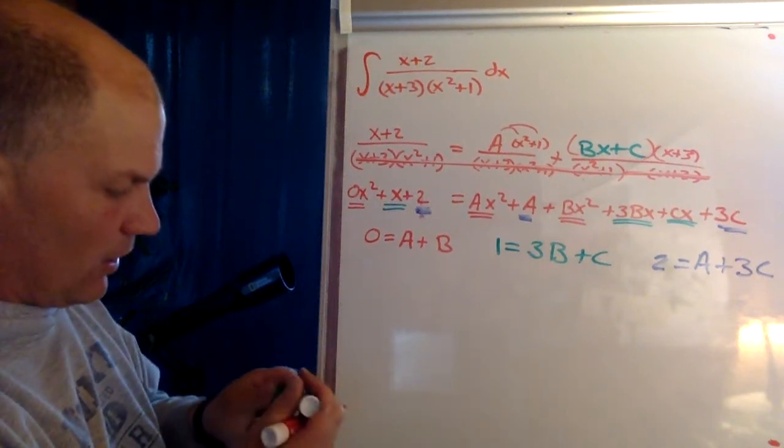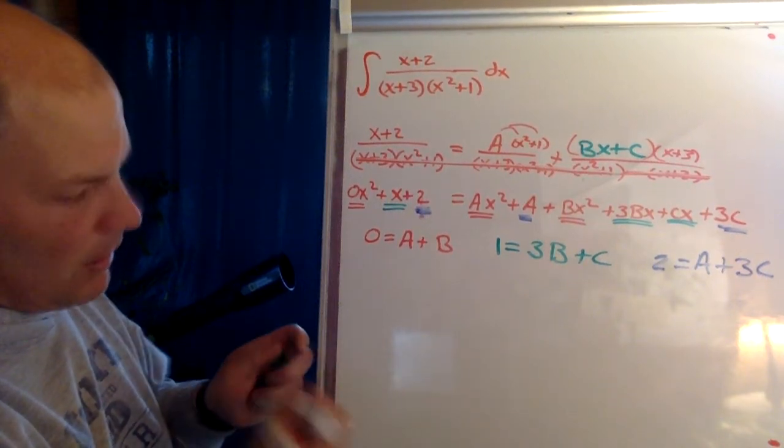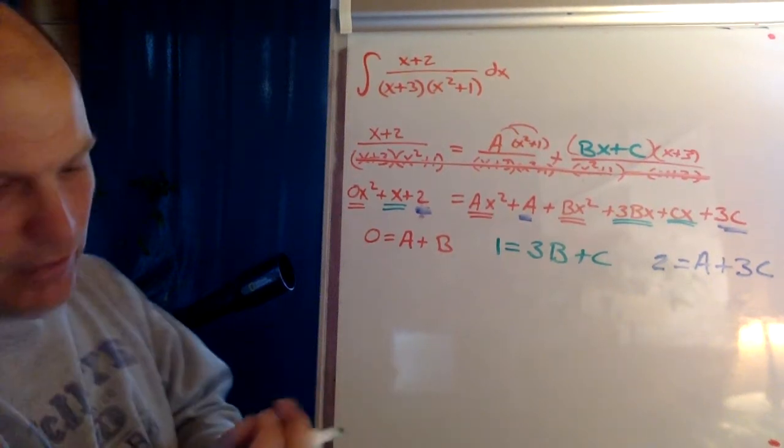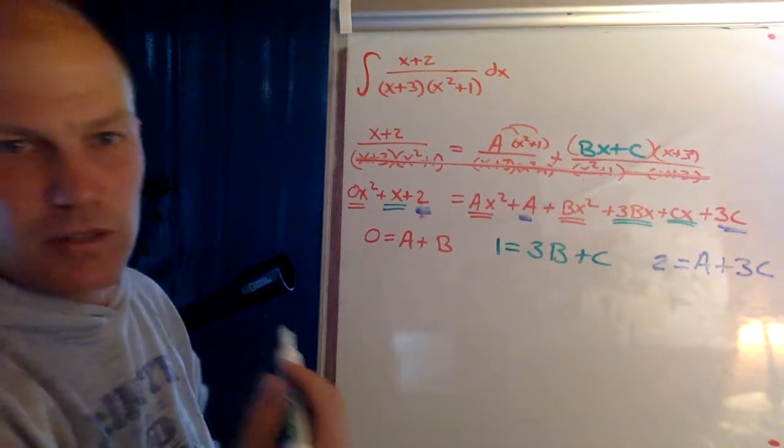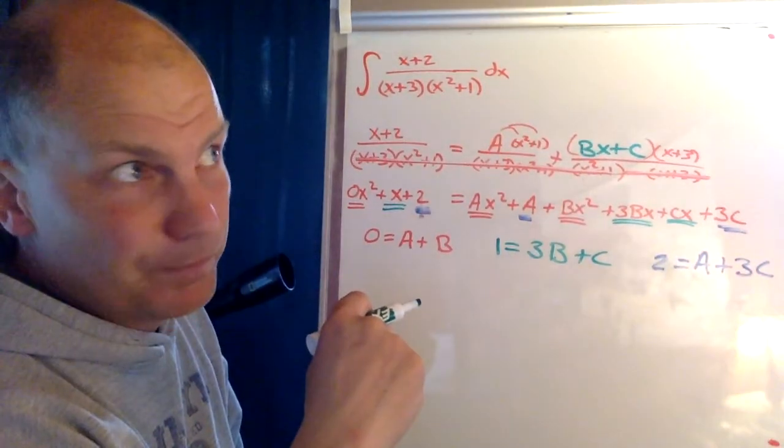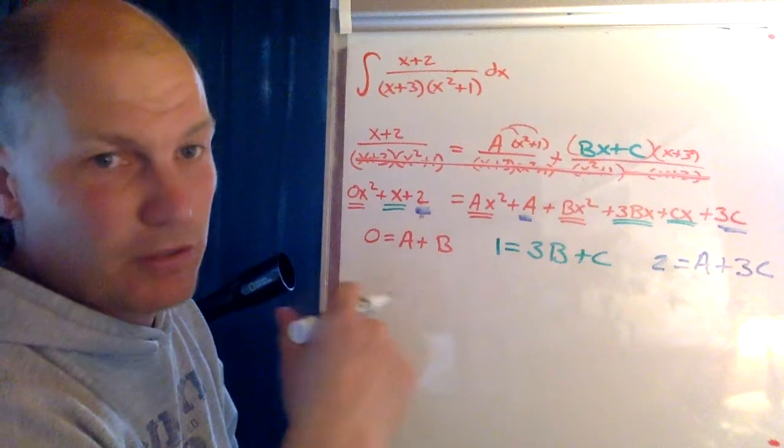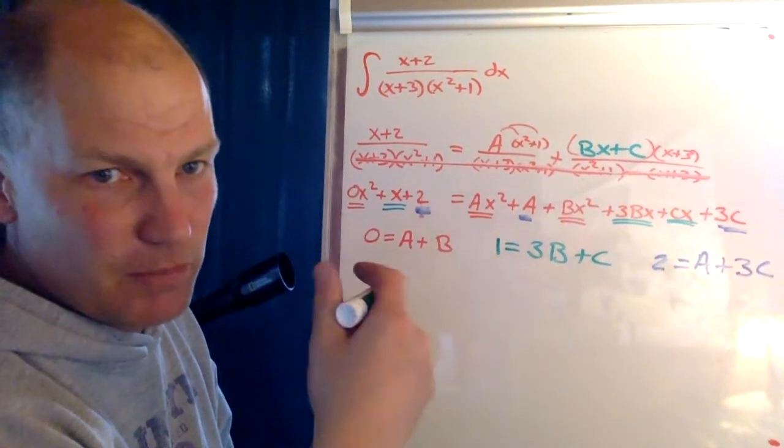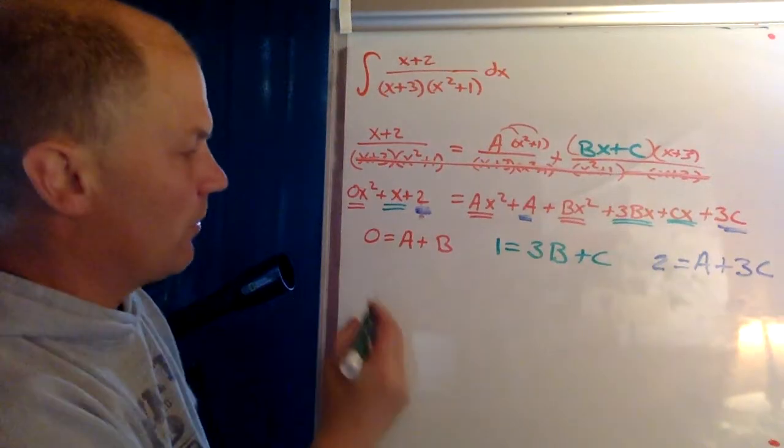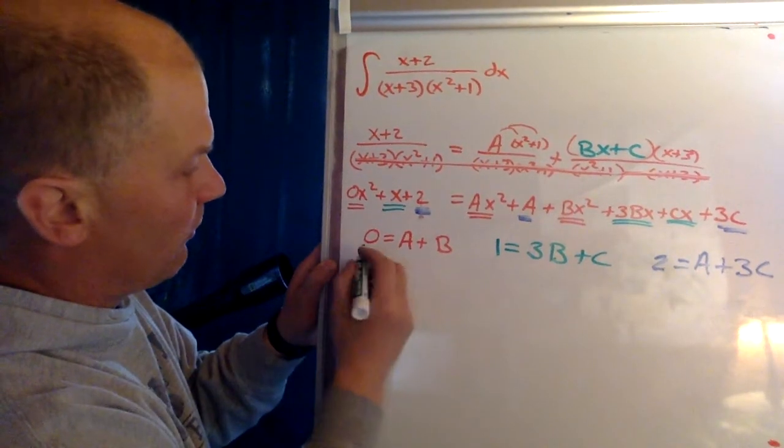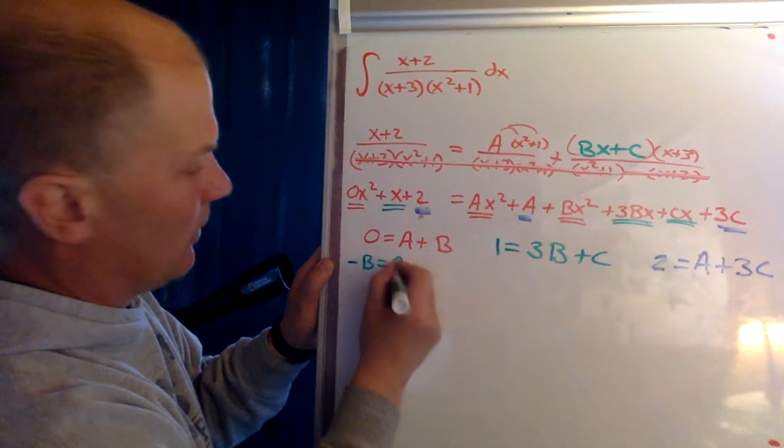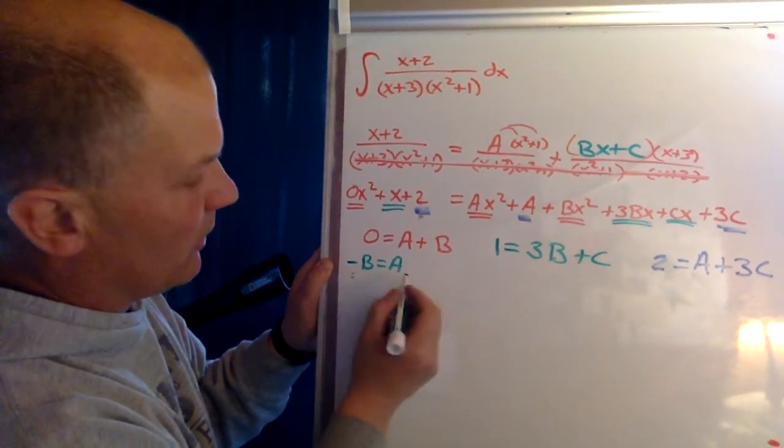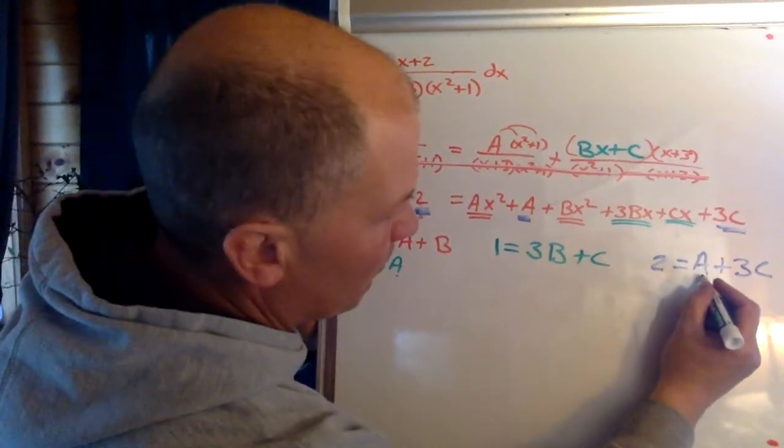So those are our three equations and our three unknowns, and now we're just going to do a whole bunch of algebra to solve for this. We are going to use substitution versus matrices or what, there's a bunch of ways to do it, but substitution seems to make the most sense right now. So I am going to solve for a. So I'm going to say negative b is a.